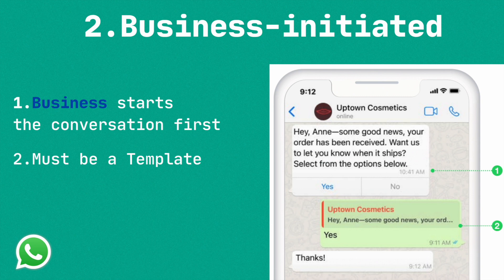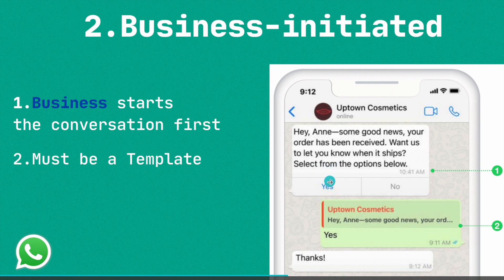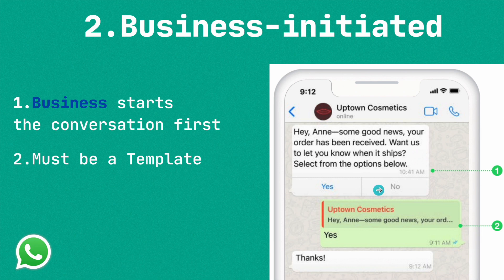The second type is business-initiated messages. In order to communicate with the customer, we have to send a template first. You can see on the right side — this is the template. We are first asking from the customer, and then if the customer responds to that message, only then can we send other messages.